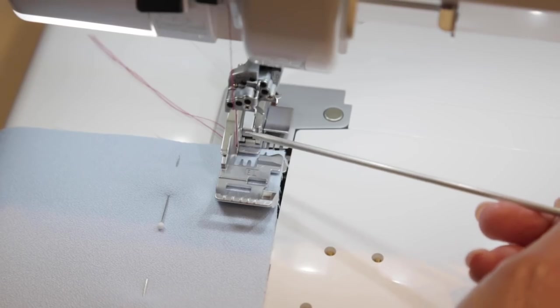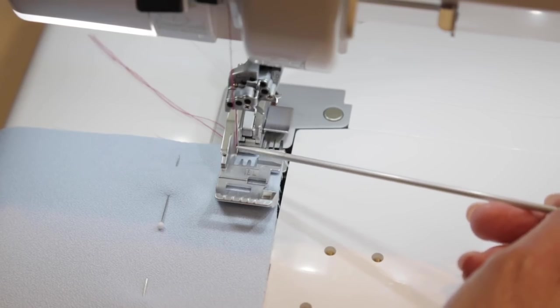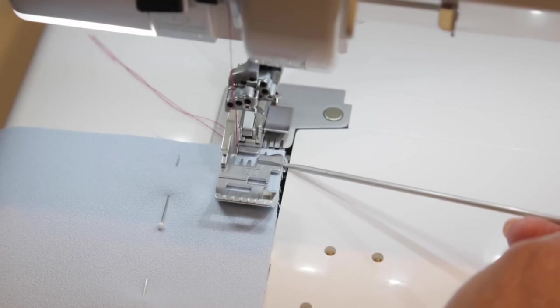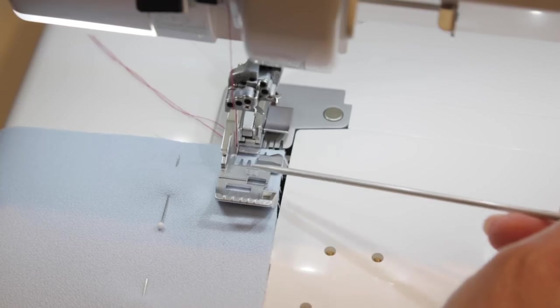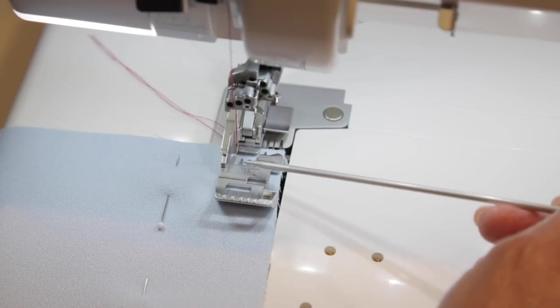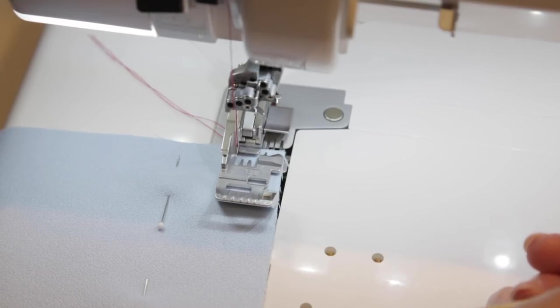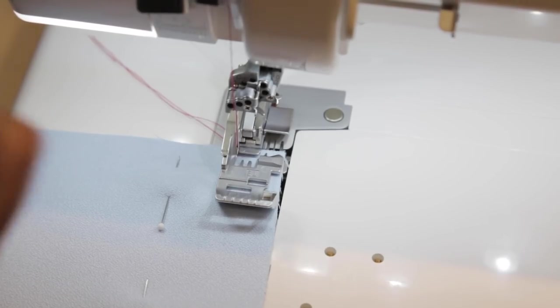We're at the machine. I have my left chain stitch needle in, and this is the edge of the, where I am aligning it with the edge of the foot. Having the left needle in, as I said before, will give me an accurate 5/8 inch seam allowance. And we'll measure that just to verify it.